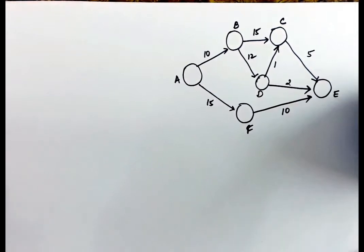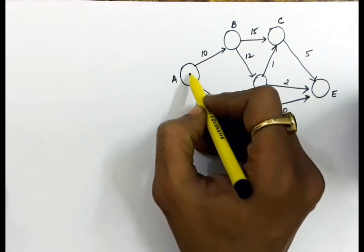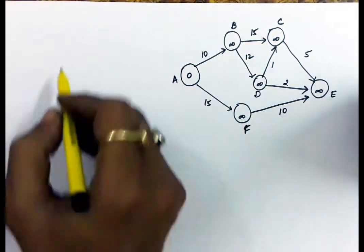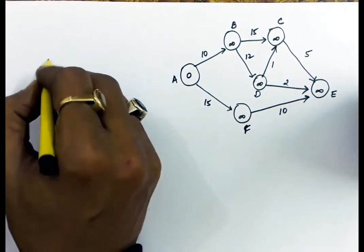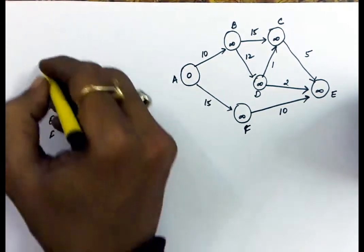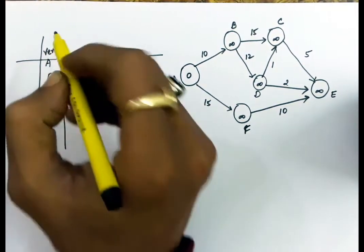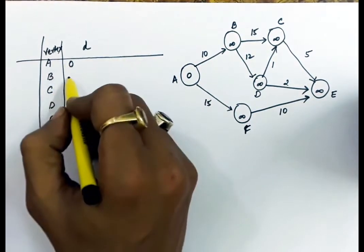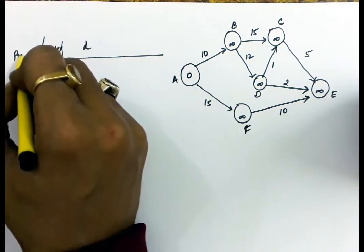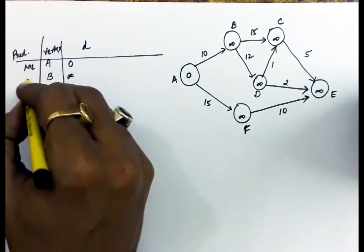Let's take another example for single source shortest path. In this algorithm, the source is A. The distance of the source will be 0 and the distance of all other vertices will be set as infinite. We will insert all these vertices — A, B, C, D, E, and F — in the priority queue. We will also track predecessors, and every vertex has a predecessor nil initially.